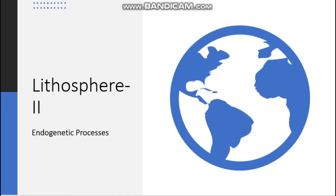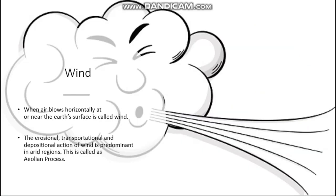In this lesson we are going to learn about wind and waves. We have already taught about underground water, sea waves, wind, etc. What do you mean by wind? When air blows horizontally at or near the earth's surface, it is called wind. Wind blows horizontally, not vertically.